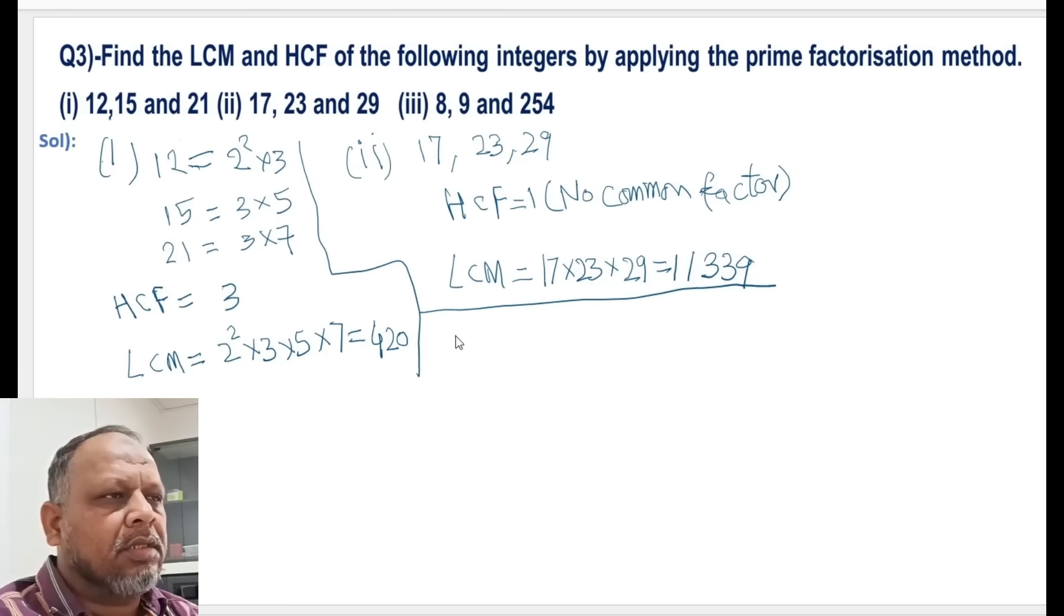Moving on to the third bit, we have got the numbers 8 equals 2 cube, 9 equals 3 square, and 254 equals 2 multiplied by 127. 127 is a prime number. As you can see, there are no common factors, so HCF is again 1.